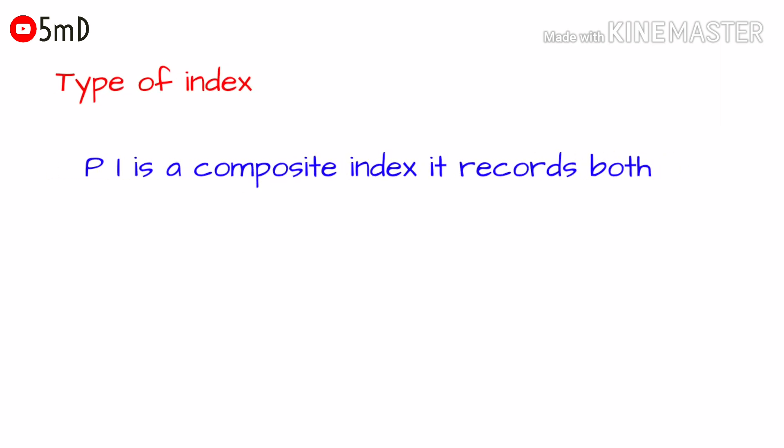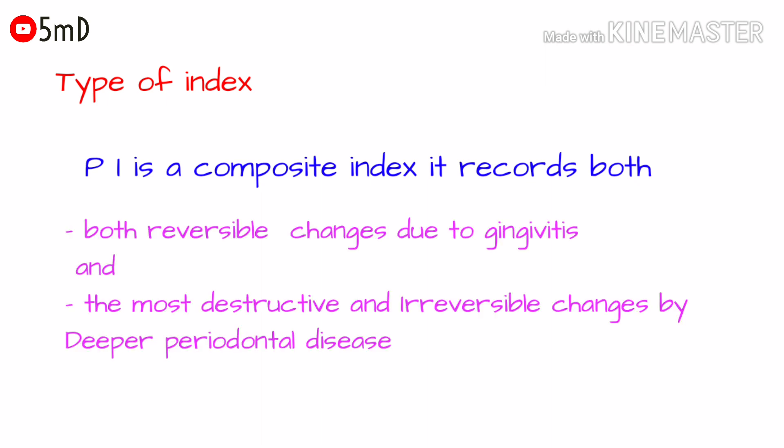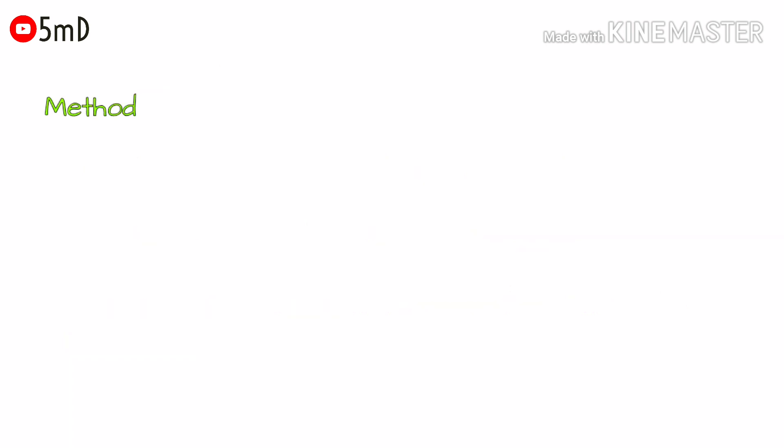What type of index is PI? Periodontal Index is a composite index because it records both reversible changes and irreversible changes. Reversible changes like gingivitis and irreversible changes like deeper periodontal diseases — both are recorded.